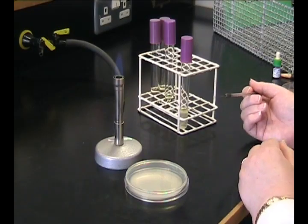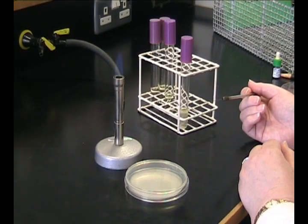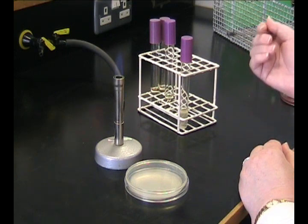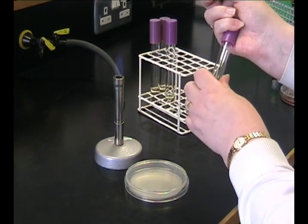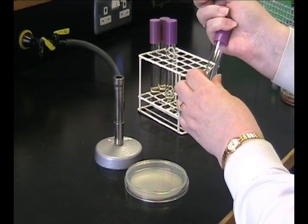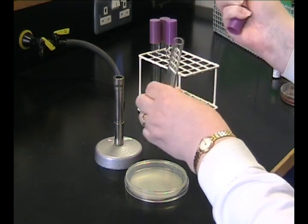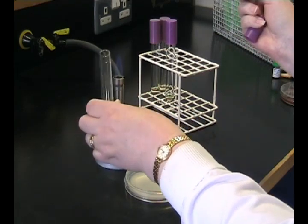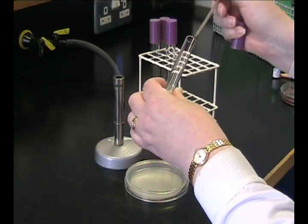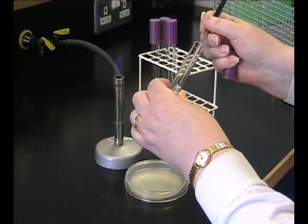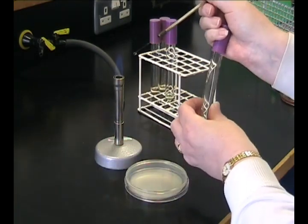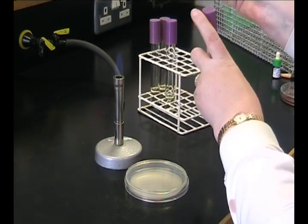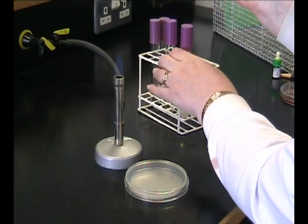To inoculate from a broth culture, use the same technique as before. But holding the test tube, remove the cap with your little finger. Make sure you flame the neck of the test tube through the Bunsen burner. Using your cooled and flamed loop, remove a drop full, a loop full of bacteria. Place the lid.